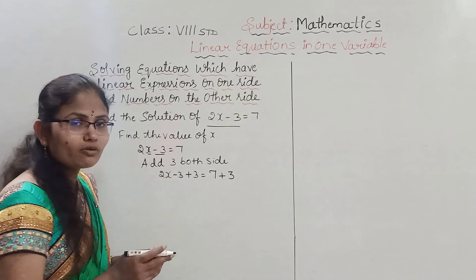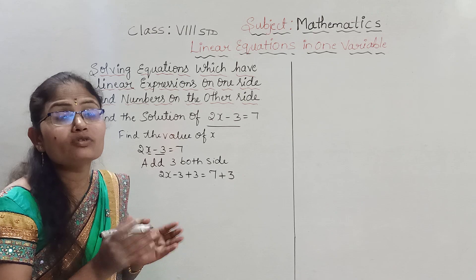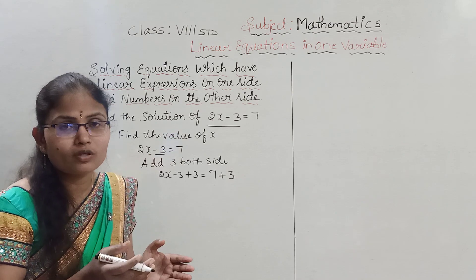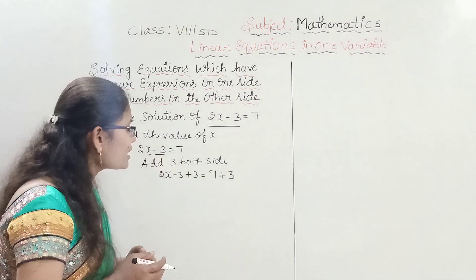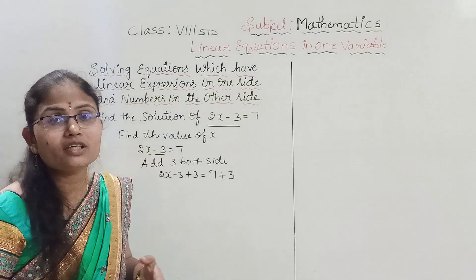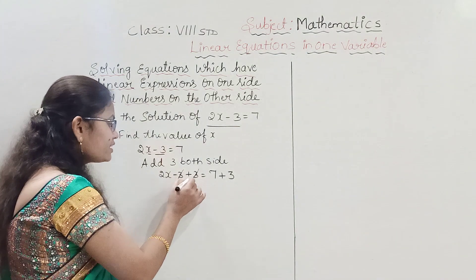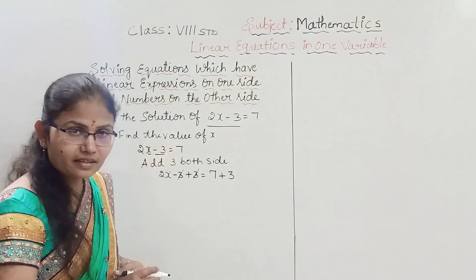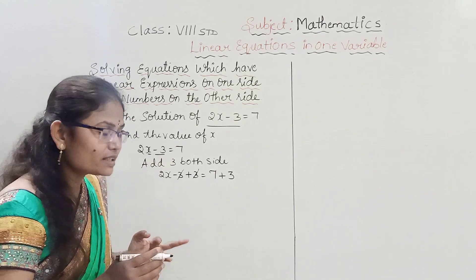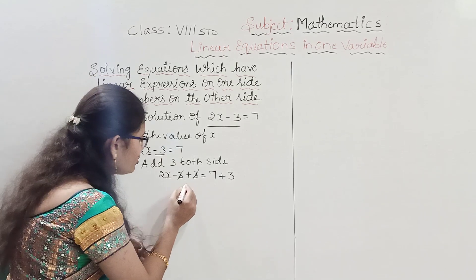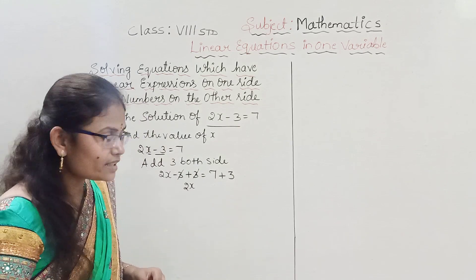Minus 3 plus 3: when a minus and plus come together we subtract, so minus 3 plus 3 equals 0 and they cancel. What remains on the LHS side is 2x.